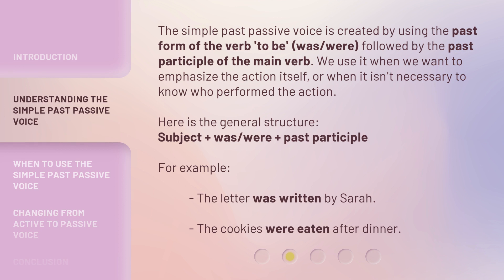The simple past passive voice is created by using the past form of the verb 'to be' — was or were — followed by the past participle of the main verb. We use it when we want to emphasize the action itself, or when it isn't necessary to know who performed the action. Here is the general structure.